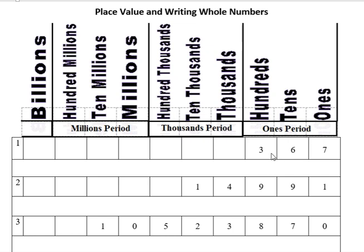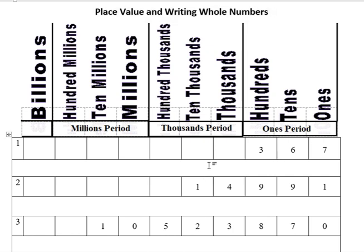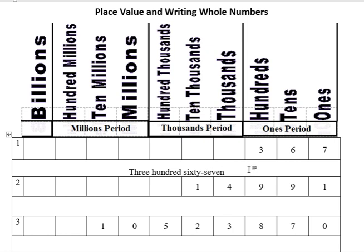The first number I have here is just three hundred sixty-seven. You're going to be asked to write these numbers. If I just have three hundred sixty-seven, that implies I'm in the ones period, and I would just write that number as 3-6-7.